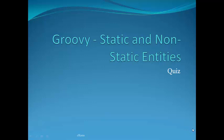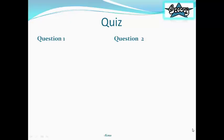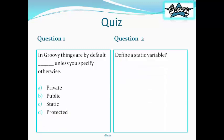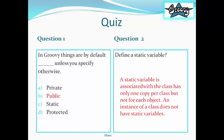Now it's time for the quiz. Quiz Question 1. In groovy things are by default dash unless you specify otherwise. A. Private B. Public C. Static D. Protected. Question 2. Define a static variable.